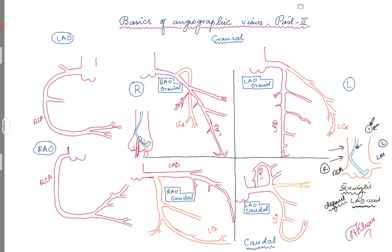When you are starting an angiogram, the first step is we cross the valve. Look at picture two — this is your straight RAO view. This is important because when you are starting an angiogram, you want to know what is the LVEDP, how is the patient's volume status, if there is any aortic stenosis — things that can give you a lot of information before you start shooting the coronaries.